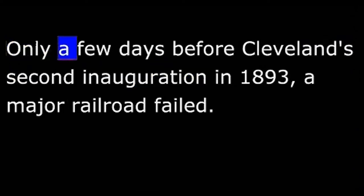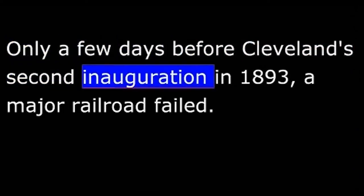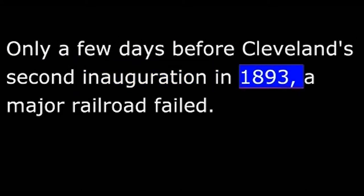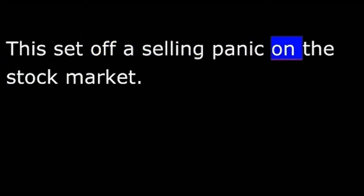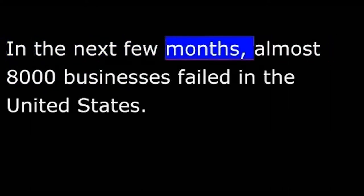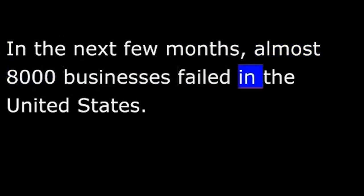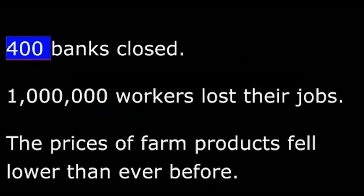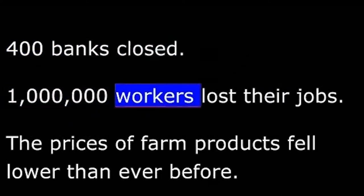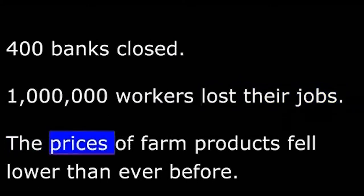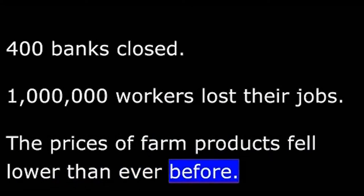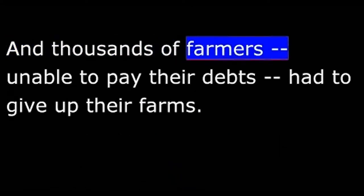Grover Cleveland immediately turned to the nation's economic problems. The country seemed headed for a serious depression. Only a few days before Cleveland's second inauguration in 1893, a major railroad failed. Then another big company declared failure. This set off a selling panic on the stock market. In the next few months, almost 8,000 businesses failed in the United States. 400 banks closed. One million workers lost their jobs. The prices of farm products fell lower than ever before, and thousands of farmers, unable to pay their debts, had to give up their farms.